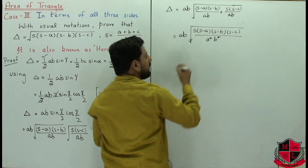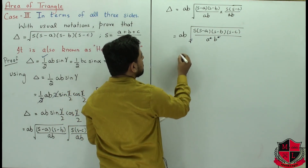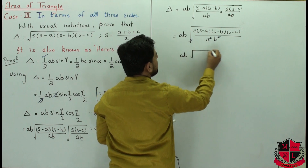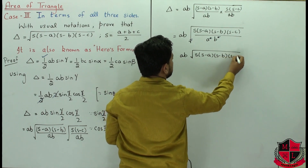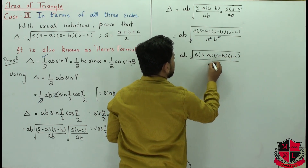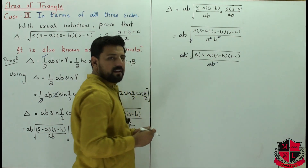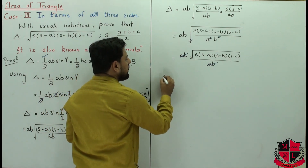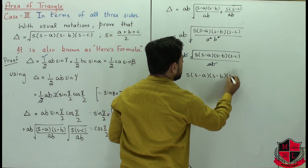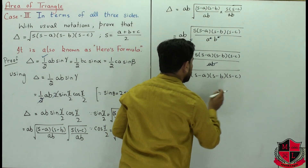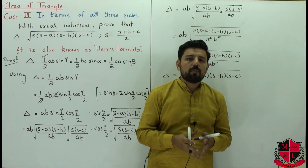After cancelling — the ab outside the square root cancels with the ab in the denominator under the square root — we are left with area of triangle equal to the square root of s(s minus a)(s minus b)(s minus c). And this is exactly Hero's formula. We use Hero's formula whenever all three sides of a triangle are given and we need to find its area.